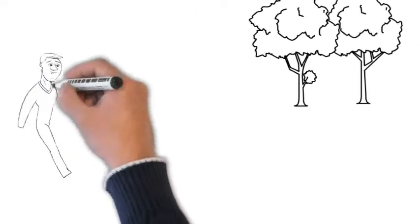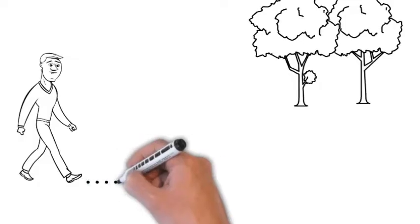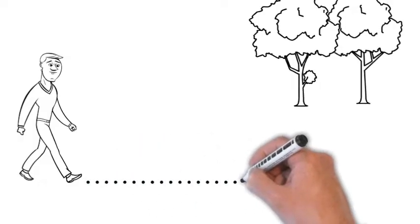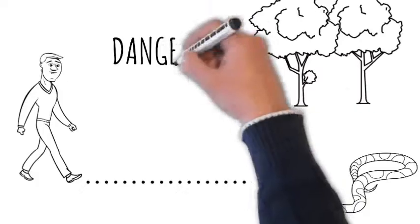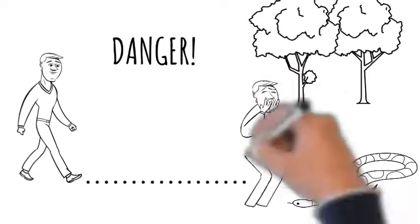When the amygdala, our body's center for emotional response, senses danger, it sets off alarms within the body and sends the body into survival mode.